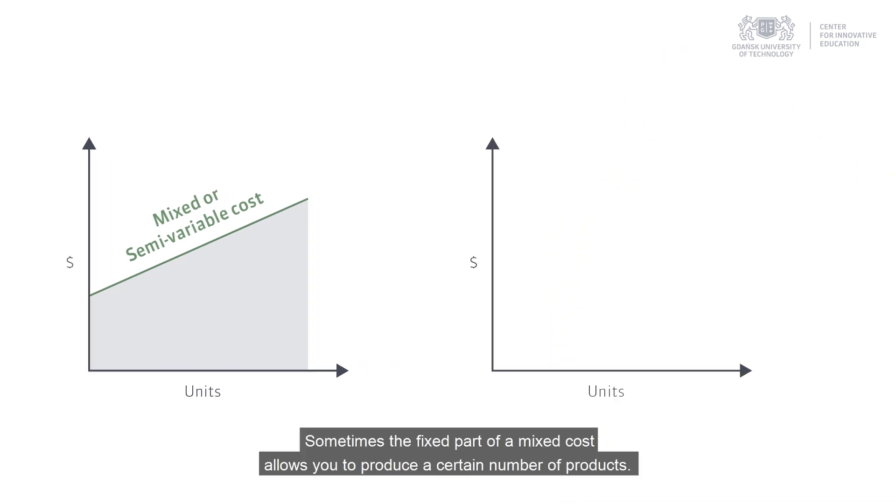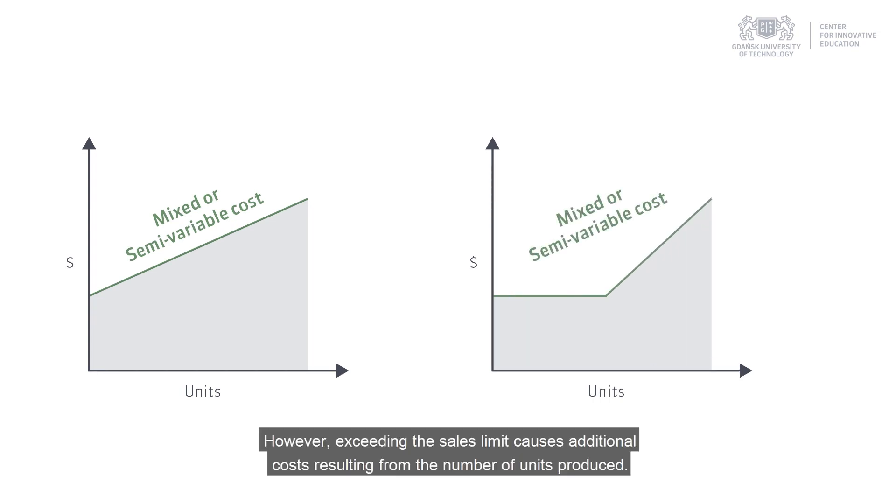Sometimes the fixed part of mixed cost allows you to produce a certain number of products. However, exceeding the sales limit causes additional costs resulting from the number of units produced.